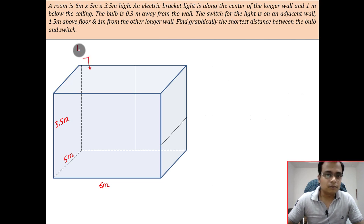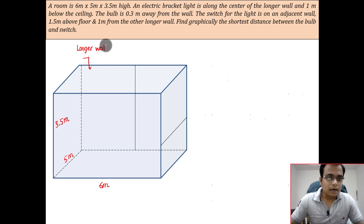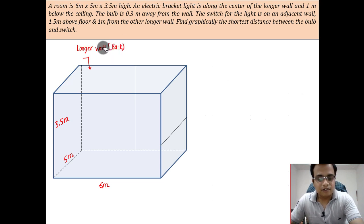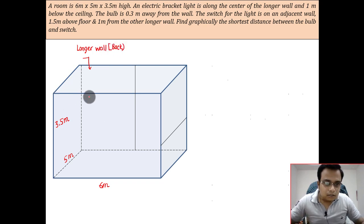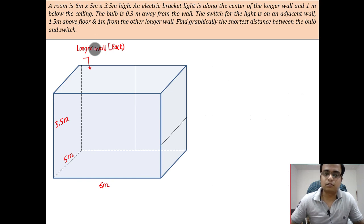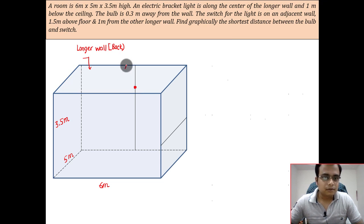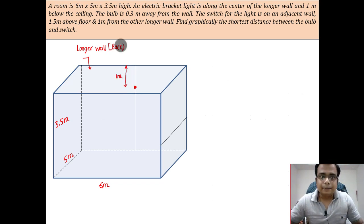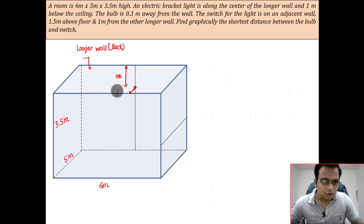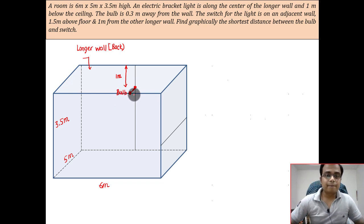By observation you can work out that this is the longer wall at the back, and there is a similar longer wall at the front as well. Somewhere along the center line of the back wall there will be a bracket, one meter below the ceiling. So this distance is one meter, and then we need to fit in a bulb that is 0.3 meters away from the wall. That's the location of the bulb.